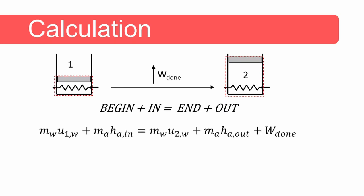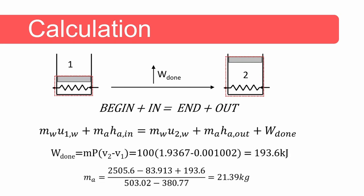Conservation of energy means the energy at the beginning plus energy flowing in equals the energy at the end plus energy flowing out. The energy at the beginning is the mass of water times the internal energy of water at state one. The energy associated with the air flowing in is the mass of air multiplied by the enthalpy of air at 500 kelvin, read from the ideal gas air table. The energy at the end is the mass of superheated steam multiplied by its internal energy, and energy flowing out with the air is the mass of air multiplied by its enthalpy at 380 kelvin, also from the air tables.